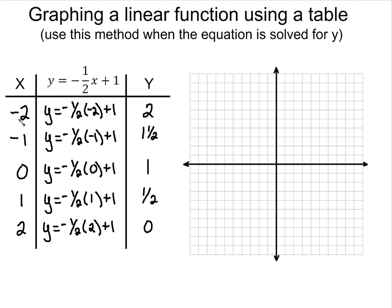So we're going to do the exact same thing we did in the last problem. We have negative 2, 2, so we're going to go over negative 2 and up 2, put a point. We have negative 1 and 1 and a half. So this time when we go up, we're just going to go into the middle of the box.